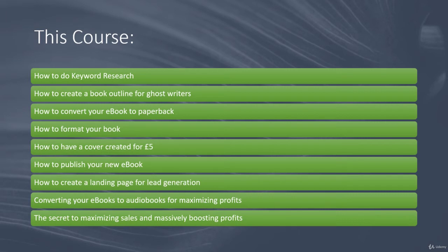We'll go through Amazon, have a look at what's selling, where we can get a book that we can sell and make lots of money. We're also going to take a look at creating a book outline. This is when we send a book outline to a ghostwriter — it'll have an outline of exactly what we're looking for, what each chapter needs to include, the start, the middle and the end, and you tell the ghostwriter exactly what you need.